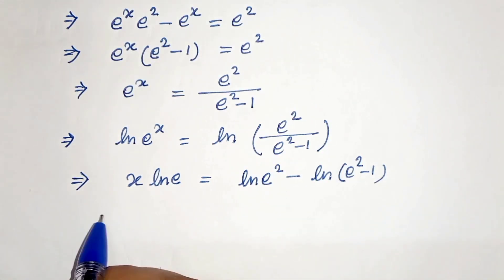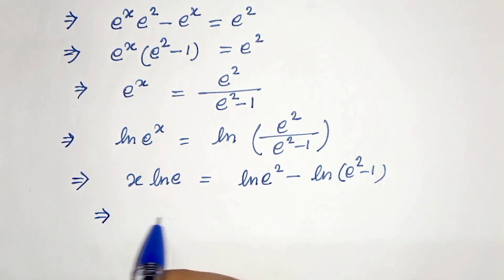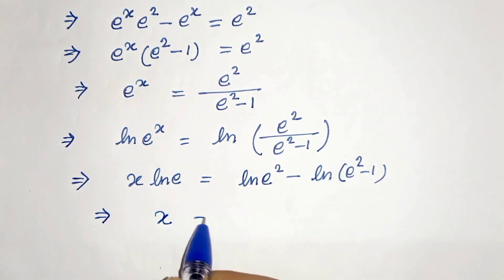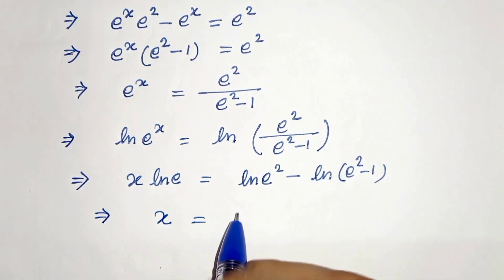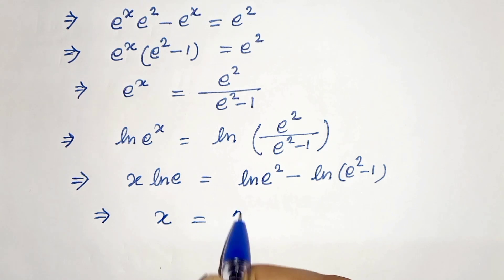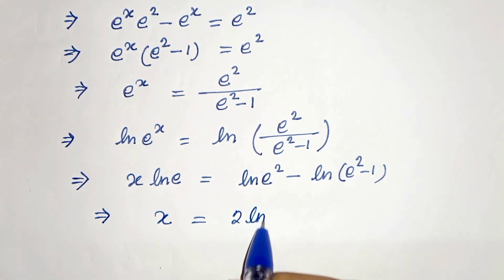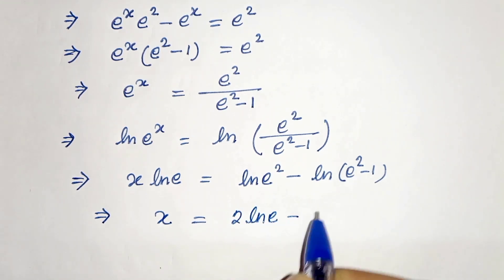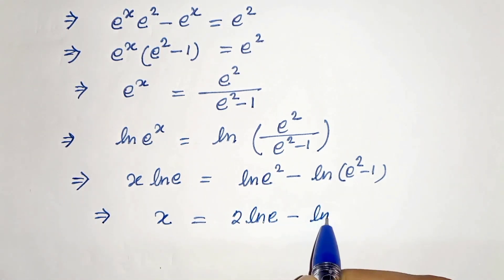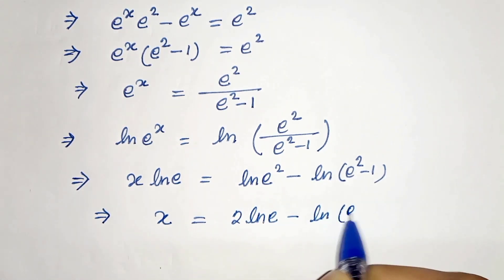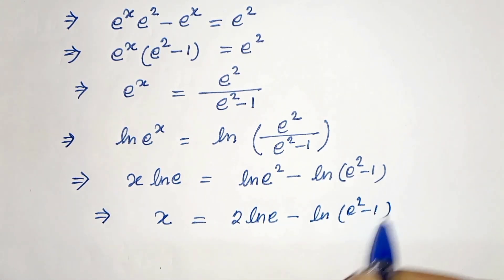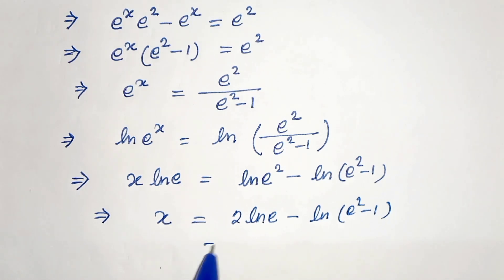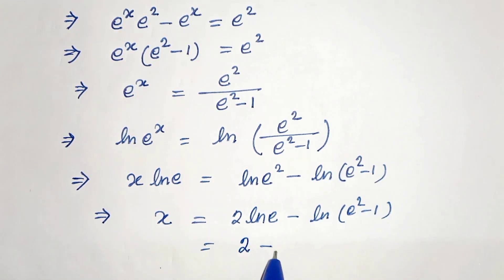Since ln e is 1, this gives x equals 2 ln e minus ln of e to the power 2 minus 1. Since ln e is 1, this simplifies to x equals 2 minus ln of e to the power 2 minus 1.